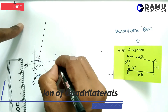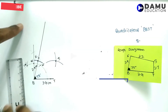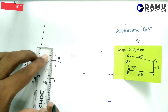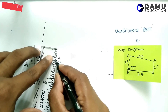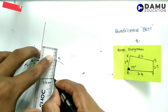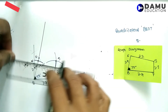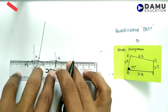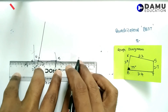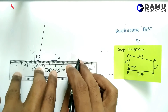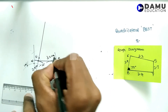These two arcs meet at a point, which is S. Join T and S — the length TS = 2.7 cm. Join E and S — it is coming exactly 3.2 cm. So ES = 3.2 cm.